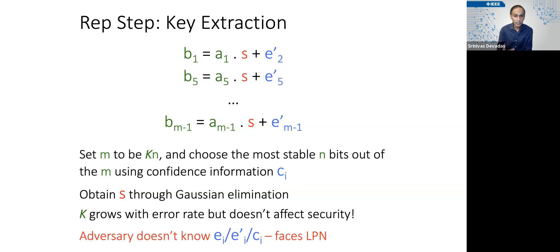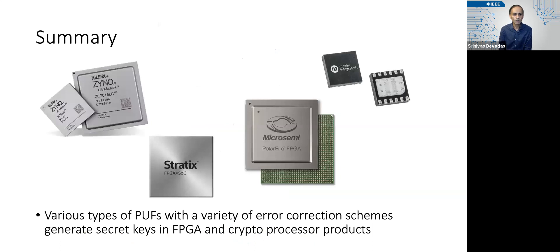And so this actually works in practice. It's been used. A variety of different PUFs, SRAM PUFs, in particular ring oscillator PUFs with a variety of error correction schemes are being used to generate secret keys in FPGAs and crypto processor products. Thank you.